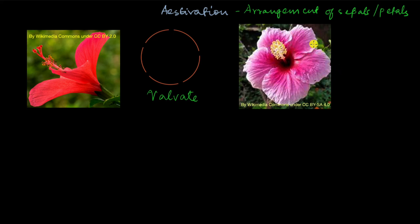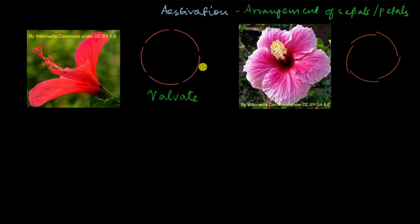For example, one edge of a petal is on top of the edge of the adjacent petal, whereas the other edge of the same petal is below the edge of the next petal. Looking anti-clockwise, the direction of overlap is the same throughout — each petal's left edge is over the previous petal and its right edge is under the next petal. This pattern follows for all petals, so it looks like valvate aestivation has been twisted. That's why this kind of aestivation is called twisted aestivation.